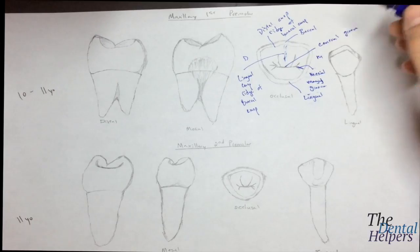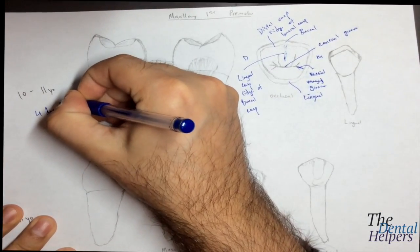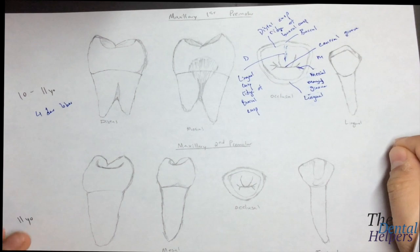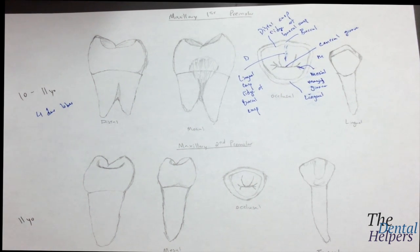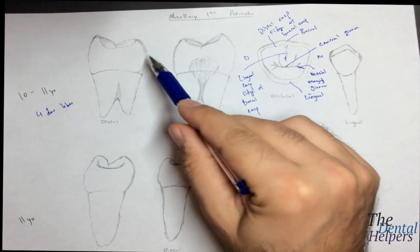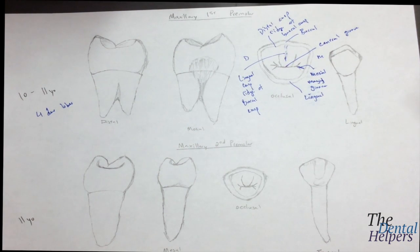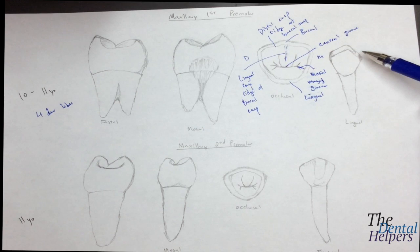There are four developmental lobes. For premolars, the trick is: the more cusps you see, the more lobes there will be. Since there are only two cusps, there are only four lobes. If there was another cusp, then we'd say there are five lobes.